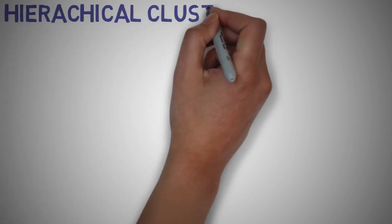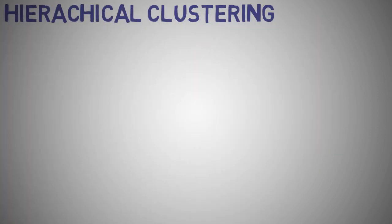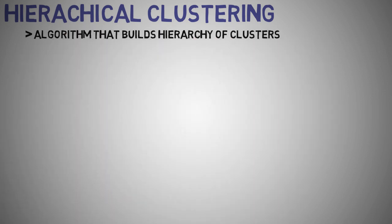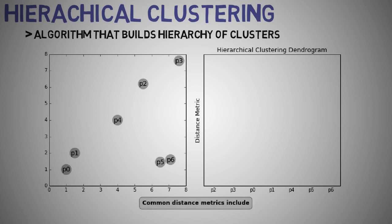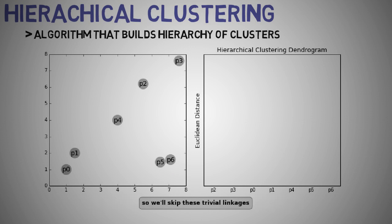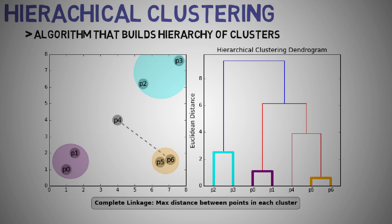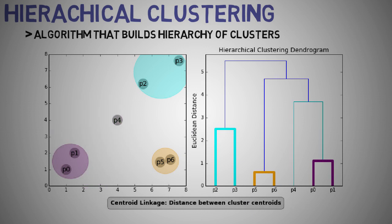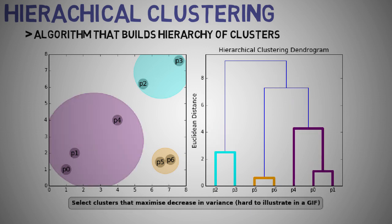Looking at the formal definition of hierarchical clustering, as the name suggests, is an algorithm that builds hierarchy of clusters. This algorithm starts with all the data points assigned to a cluster of their own. Then two nearest clusters are merged into the same cluster. In the end the algorithm terminates only when there is a single cluster left. The result of the hierarchical clustering can be shown using a dendogram as we've seen before which can be thought of as a binary tree.